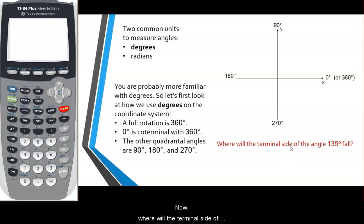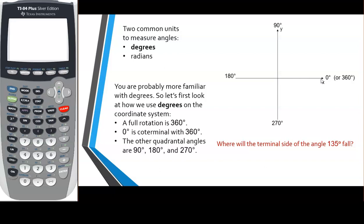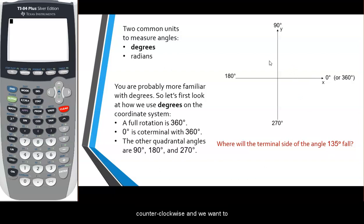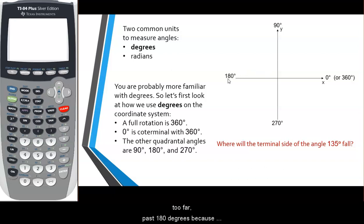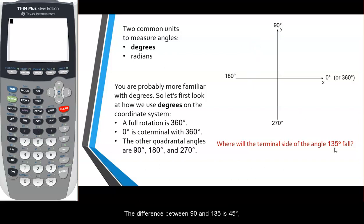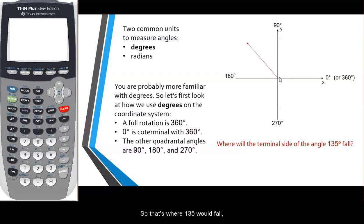Now, where will the terminal side of 135 degrees fall? Remember that the initial side always starts at the positive x-axis. Since this is a positive angle, we rotate counterclockwise. We want to rotate 135 degrees — past 90 degrees but not as far as 180 degrees. So somewhere between 90 and 180. The difference between 90 and 135 is 45 degrees, which is halfway between 90 and 180. So that's where 135 degrees falls.